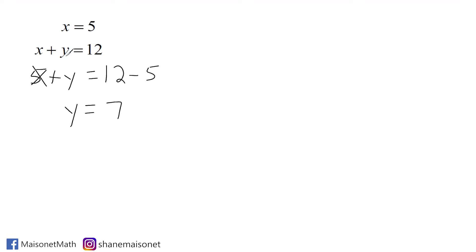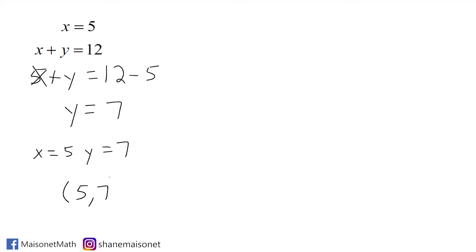So we know that x equals 5 and y equals 7. The solution to this system as an ordered pair would be (5, 7), meaning this is the single point on the coordinate plane where the two lines formed by these two equations would intersect each other.